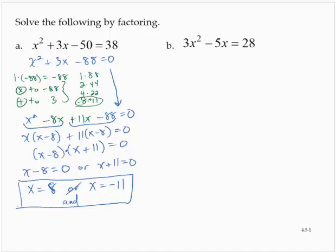3x squared minus 5x is equal to 28. As with the previous exercise, I'm going to make it look like polynomial equals 0. So I'll subtract 28 from both sides. 3x squared minus 5x minus 28 is 0.